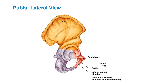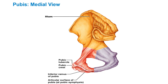Here is the obturator foramen, the pubic body, the inferior rami, and the articular surface of the pubis articulating with the ischium. The pubic symphysis isn't shown here because the bones aren't together. Here's the pubic tubercle, the inferior rami, and the articular surface at the pubic symphysis.